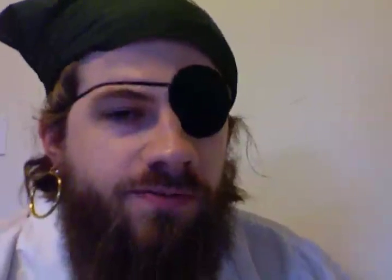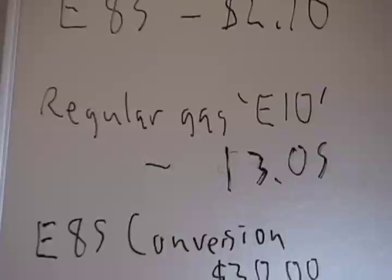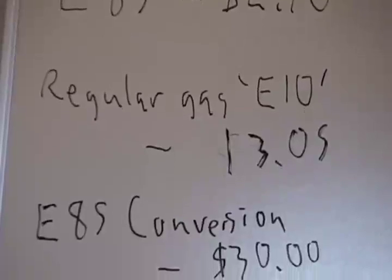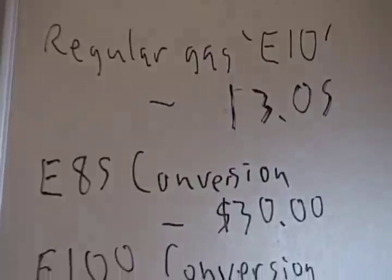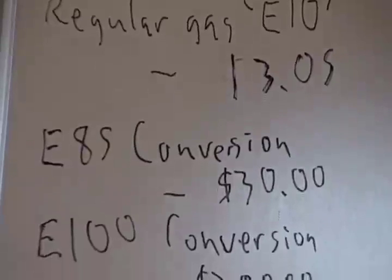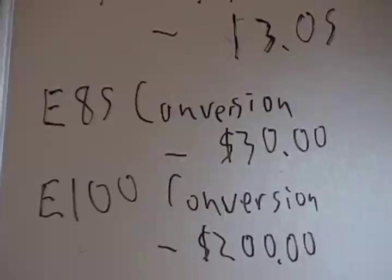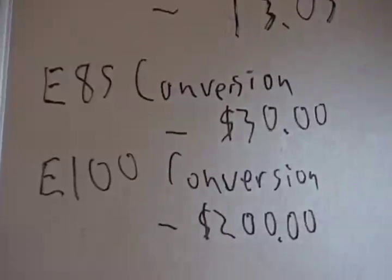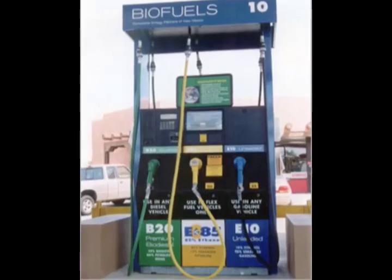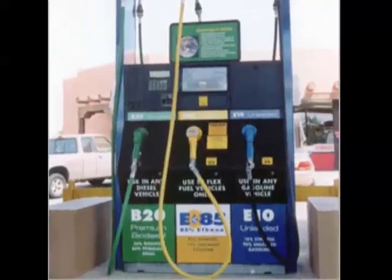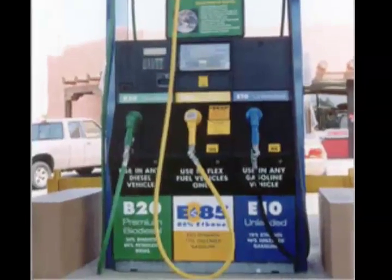How much does flex fuel cost to buy? E85 currently costs $2.10 per gallon, whereas regular gas, which is E10, currently costs $3.05 a gallon. And that price, of course, is based on oil prices, which continues to rise.